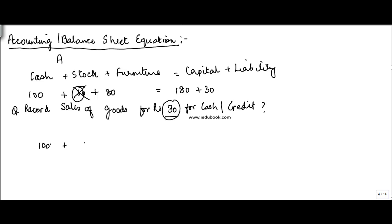You are left with 100 plus 80. Cash becomes zero for cash, so if this works for cash you will add 30 to the cash. You get 130 plus 80 equals 180 plus 30. So this gives you 210, this gives you 210.